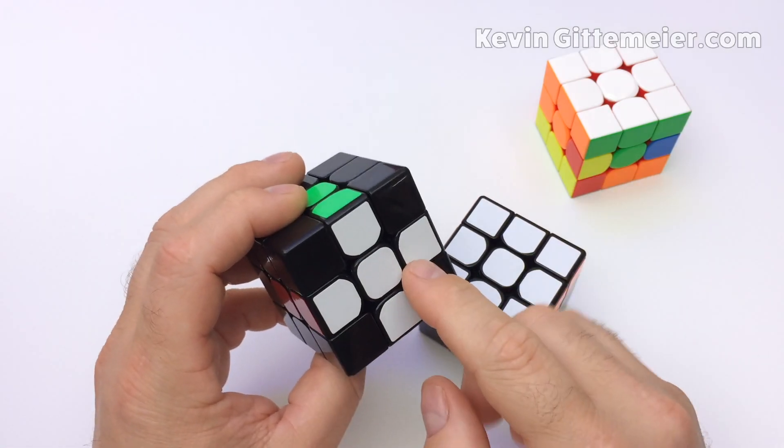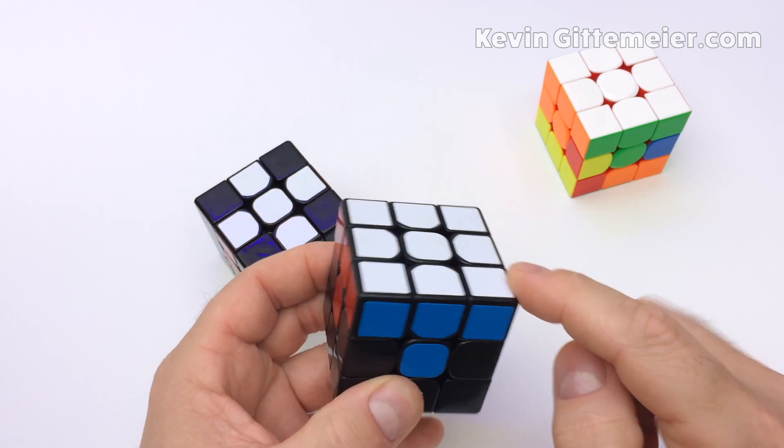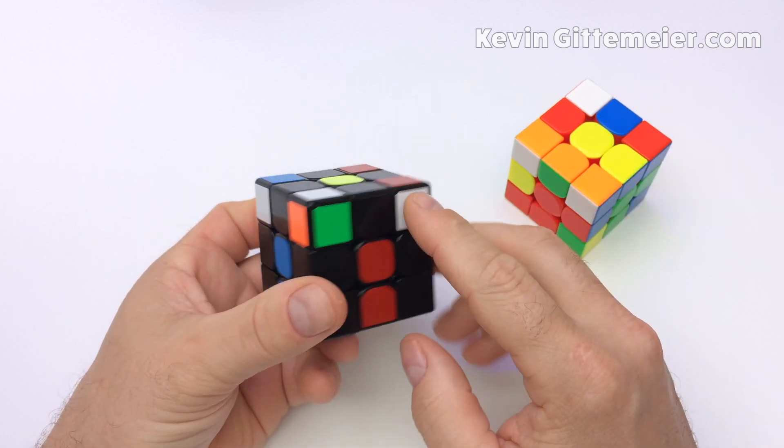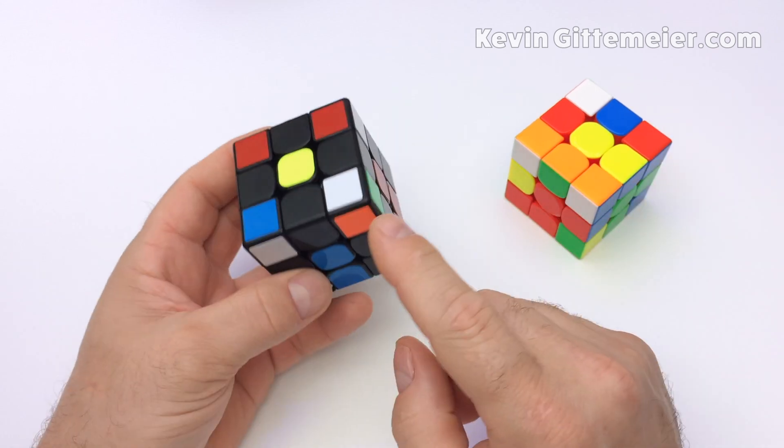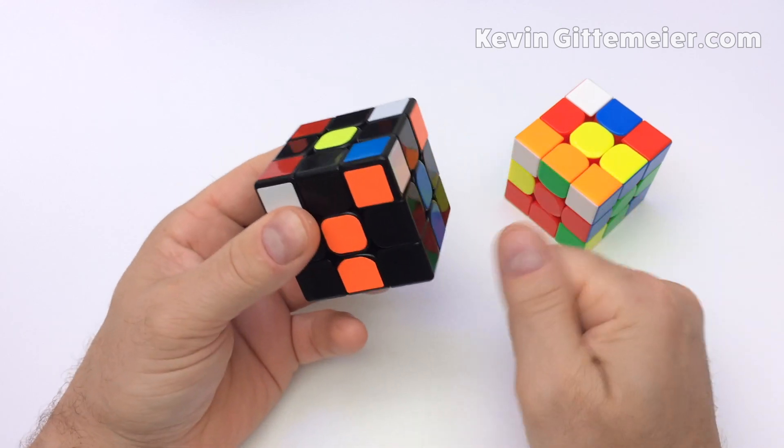Once we have the white cross on the bottom, we only need four corners to finish the first layer, the bottom layer. To do this we find a corner on top with a white sticker facing to the side, not facing up. Then we place it above its intended location.